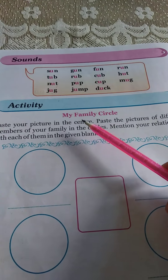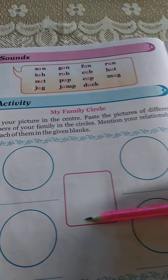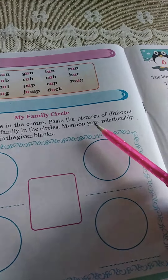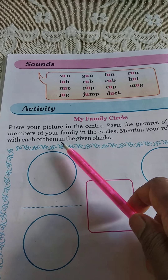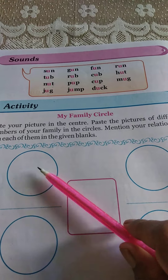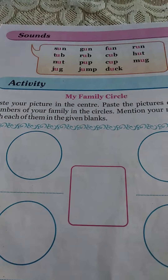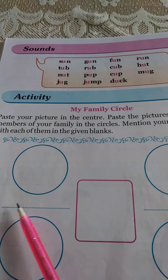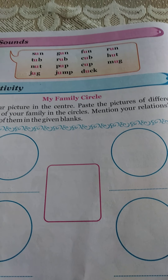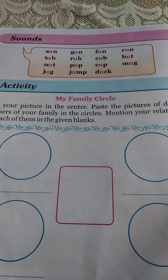My family circle. Paste your picture in the center — center mein aapka picture paste karna. Paste your picture of different members of your family in the circles. Mention your relationship with each of them — mama to mother, papa to father, grandmother to grandma, bhaiya to brother as a relation. This also you do.